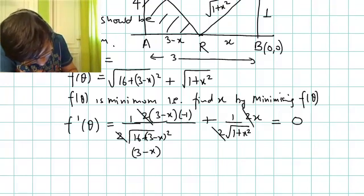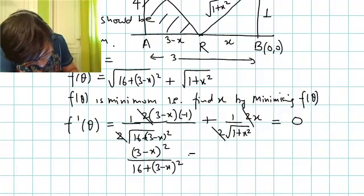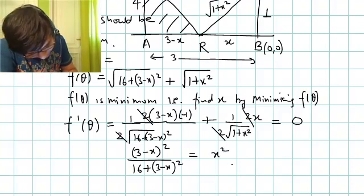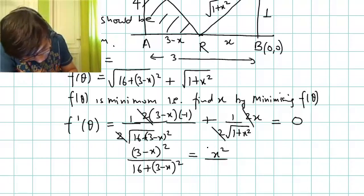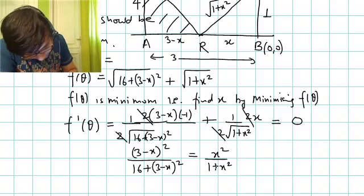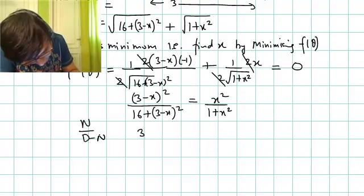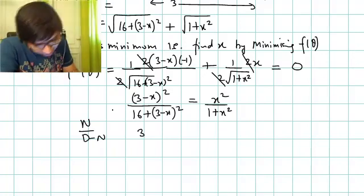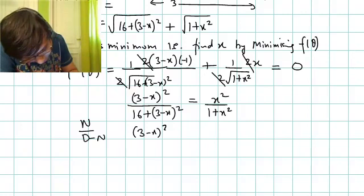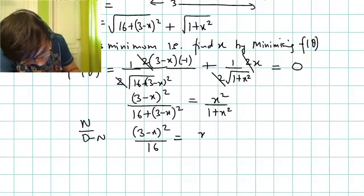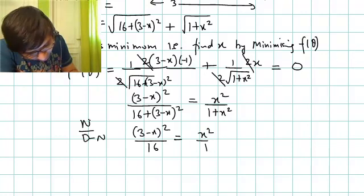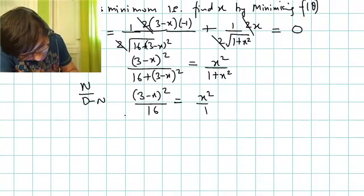Divide by 16+(3-x)² equals x²/(1+x²). Now using componendo and dividendo, we can simplify this. Subtracting - I apply this operation in denominator, d minus n. If I apply this operation on the left hand side, same operation I have to apply on right hand side. So (3-x)²/16 equals x²/1, subtracting denominator from numerator, applying this operation on both sides. If you cross multiply...